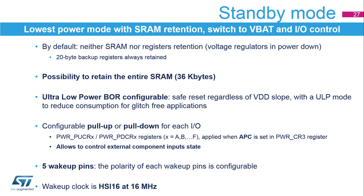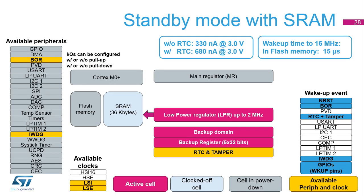Five wake-up pins are available to wake up the device from standby mode, and the polarity of each is configurable. The wake-up clock is HSI with a frequency of 16 MHz. In standby mode with SRAM, the main regulator is powered down and the low-power regulator supplies the SRAM to preserve its content. The RTC, clocked by the internal or external low-speed oscillator, may remain active. The brownout reset can be enabled. The independent watchdog can also be enabled in standby mode. Reset, brownout or power-down reset, RTC and tamper detection, independent watchdog, and any event on the five wake-up pins can exit the MCU from standby mode. The standby mode with SRAM consumption without RTC is around 330 nanoamps typical at 3 volts. The wake-up time is approximately 15 microseconds.